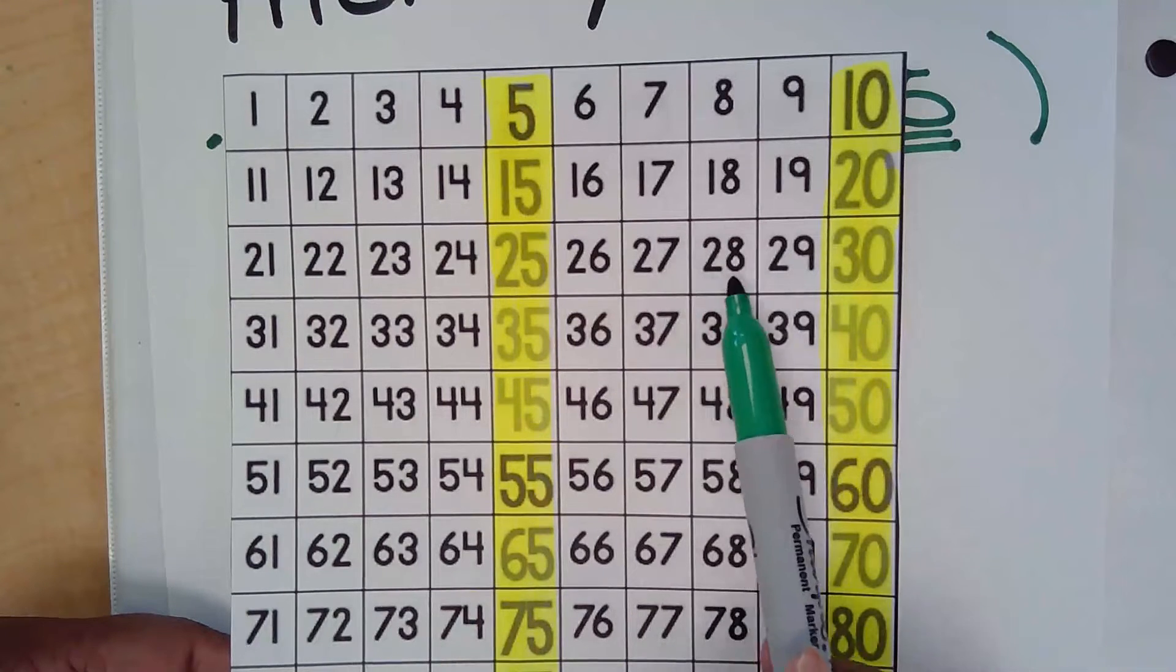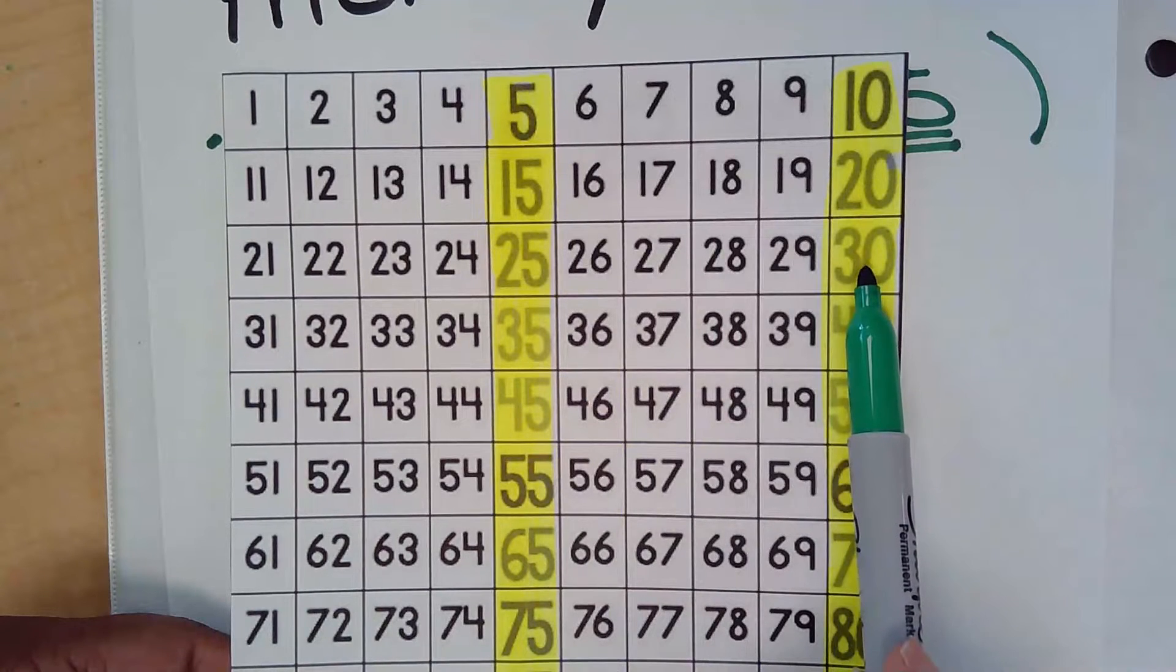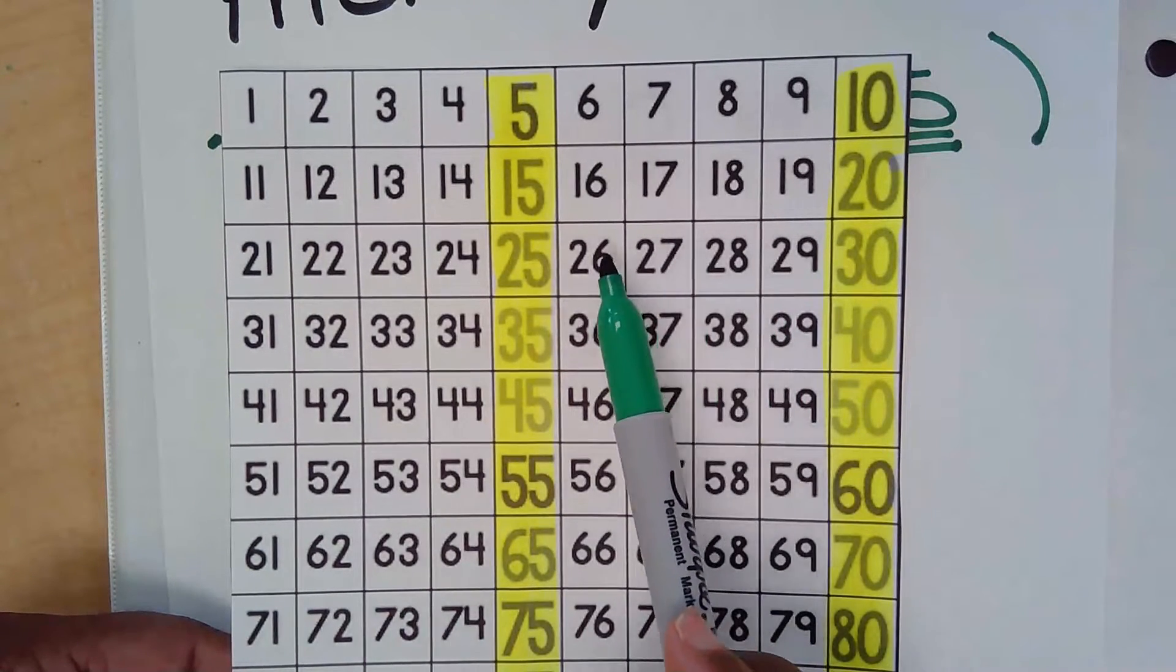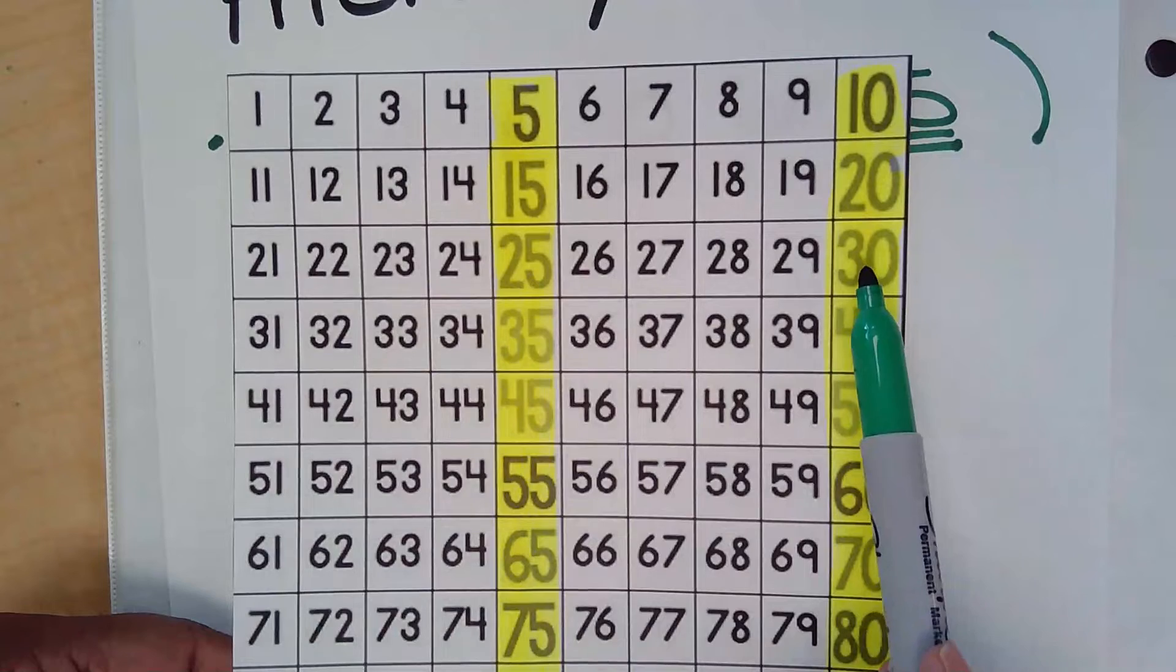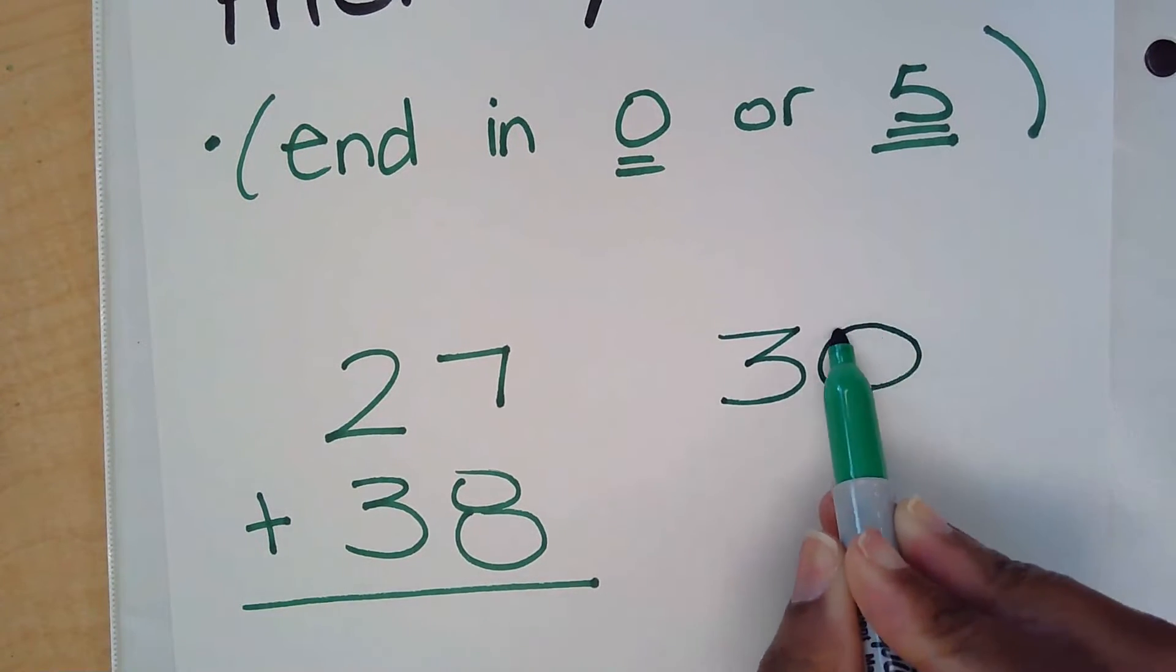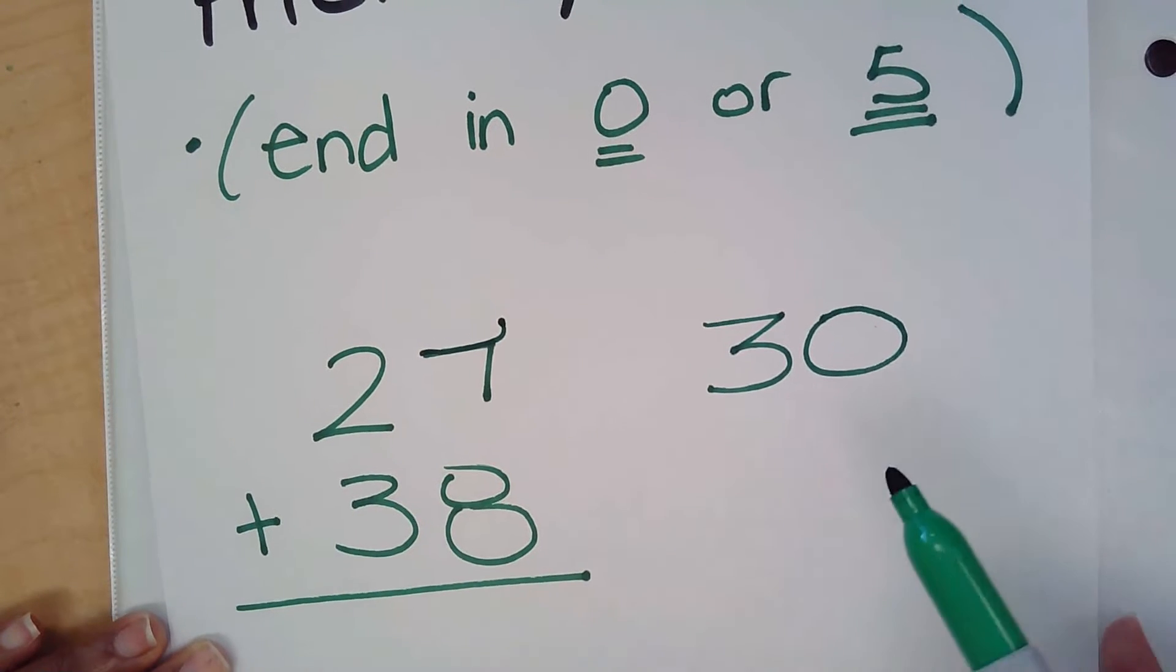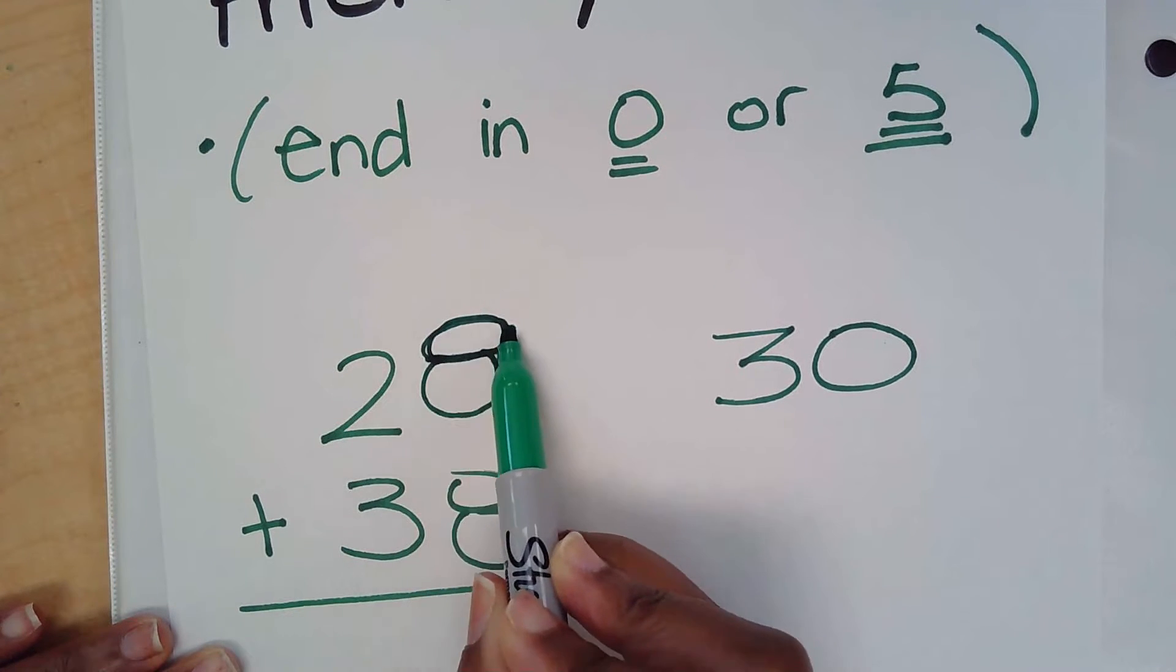Now if we look at 28, is 28 closer to 25 or is it closer to 30? Well, it is closer to 30 because it only takes two jumps to get to 30 while it takes three jumps to get to 25. So the most compatible of these two numbers in this row would be 30, so we would use 30 as our compatible number. And I just realized I chose 28 while my number is 27, so for now I'm going to actually change it to 28 just so it makes more sense.